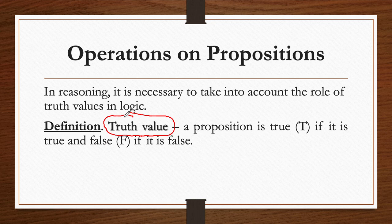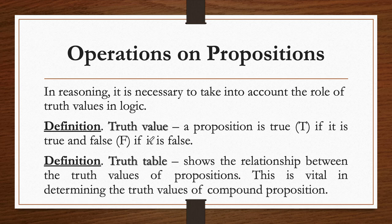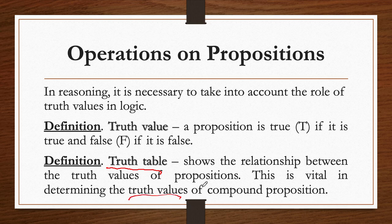We can get the truth values of each simple proposition or the component proposition in a compound one. But in a compound proposition, we cannot get the values directly. We're going to need the help of what we call a truth table. A truth table shows the relationship between the truth values of propositions. It is vital in determining the truth values of the compound proposition.